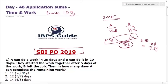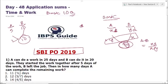In how many days can A and B together do the work? It will be the total work divided by the sum of their efficiencies. For example, suppose A can do it in 5 days and B can do it in 10 days. LCM is 10. Efficiency of A is 10÷5 = 2, efficiency of B is 10÷10 = 1. Together they complete it in 10÷3 = 3 and 1/3 days.